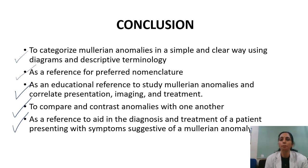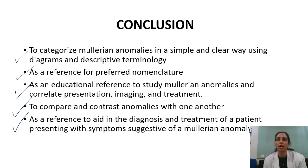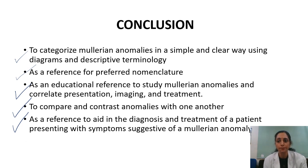To conclude, MAC 2021 is helpful to categorize Mullerian anomalies in a simple and clear way using diagrams and descriptive terminology — as a reference for preferred nomenclature, as an educational reference to study Mullerian anomalies and correlate presentation, imaging, and treatment, to compare and contrast anomalies with one another, and as a reference to aid in diagnosis and treatment of a patient presenting with symptoms suggestive of a Mullerian anomaly. I hope MAC 2021 is now clear, and you can go back to the article and read it with better understanding.